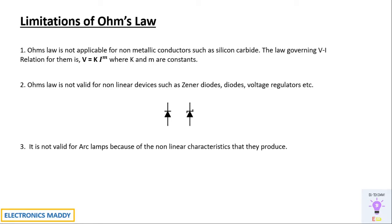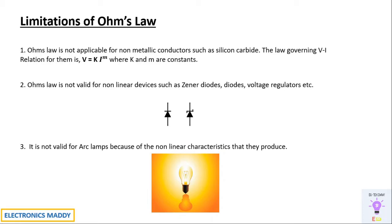The next limitation is that Ohm's law is not valid for arc lamps because of their non-linear characteristics. This is a typical representation of a carbon arc lamp — these are basically bulbs that use arc lamps in them; you can call them arc furnaces as well. So Ohm's law is not valid fundamentally in these three areas. Be very careful in remembering these fundamentals.